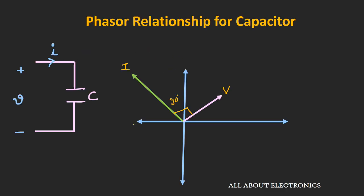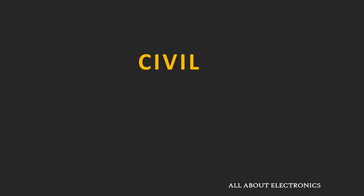In summary: for a resistive circuit, current and voltage are in phase. For a purely inductive circuit, the voltage leads the current by 90 degrees. For a purely capacitive circuit, the current leads the voltage by 90 degrees. To remember these voltage-current relationships, use the mnemonic CIVIL: the first three letters C, I, V mean that in a Capacitor, current (I) leads voltage (V); the last three letters V, I, L mean that in an inductor (L), voltage (V) leads current (I) by 90 degrees.